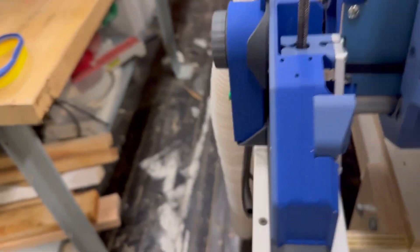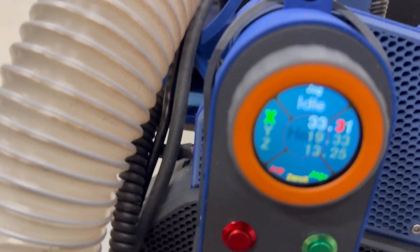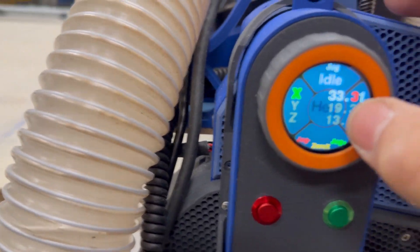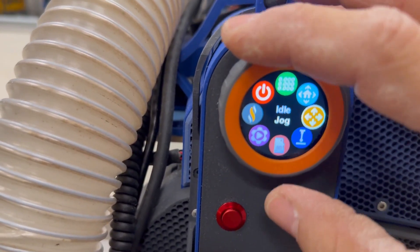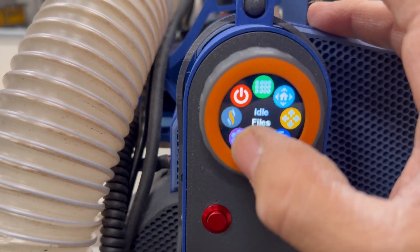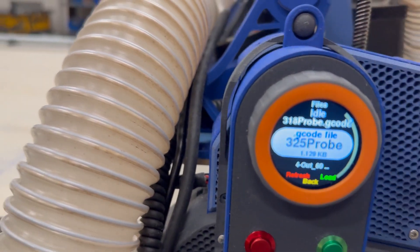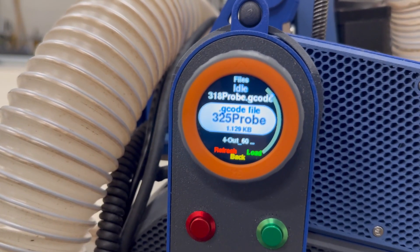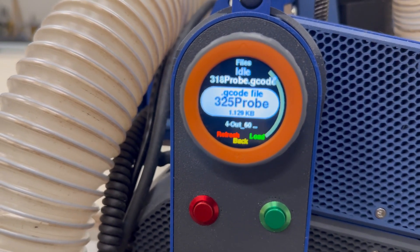Then I'm going to run. I'll come over here to my pendant, and I'm going to flick out of this screen. I'm going to go down to my SD card, and I have a file. The 325 means it's three axis, and I'm probing a quarter inch bit or a six mil bit.